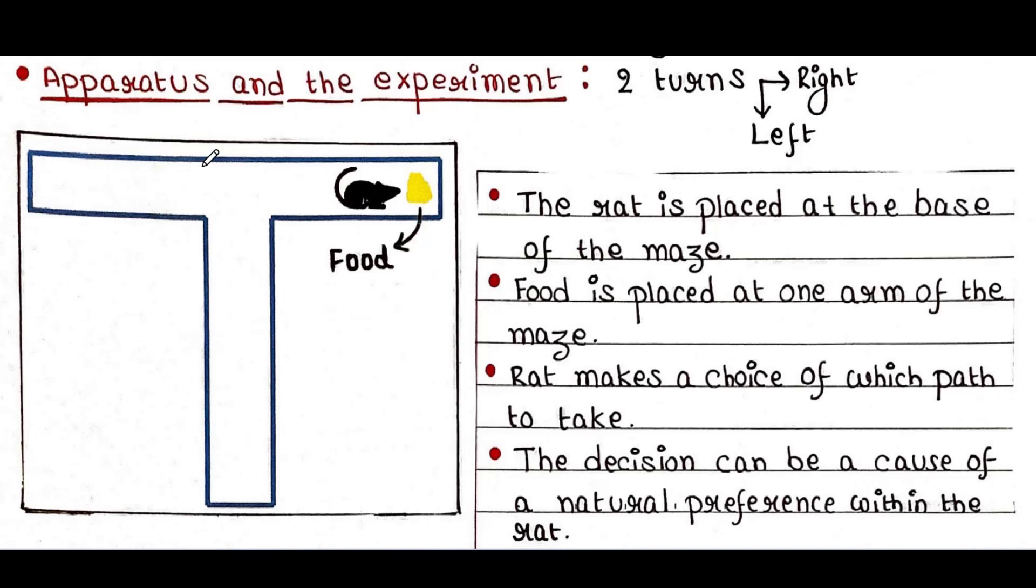Now the same experiment is repeated multiple times with no reward in either arm of the maze. First, the food was placed in the right arm and the rat was placed at the base.